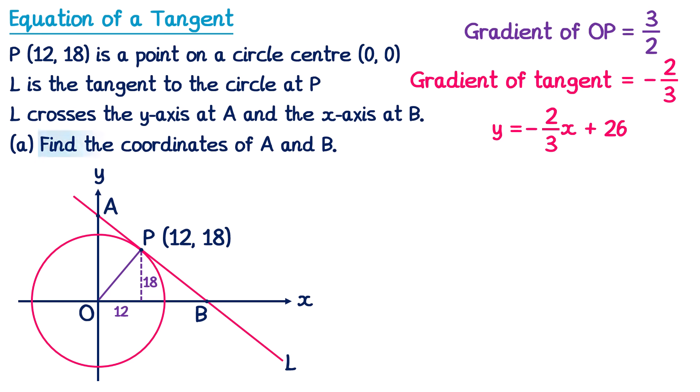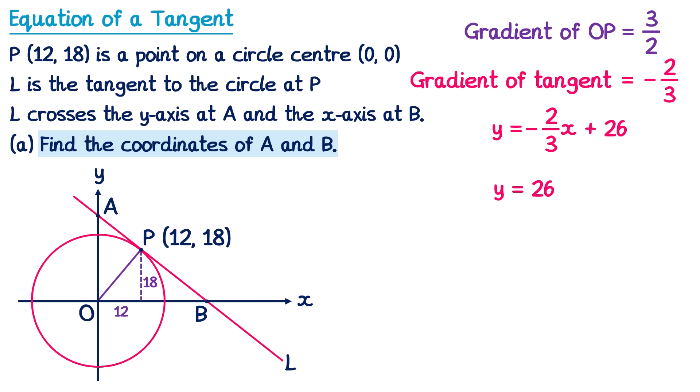We've been asked to find the coordinates of A and B. Let's start with point A, which is on the Y axis, meaning its X coordinate is 0. If we substitute 0 for X into our equation, we get Y equals negative 2 thirds of 0 plus 26. Negative 2 thirds of 0 is 0, so Y equals 26. The coordinates of A must be (0, 26).